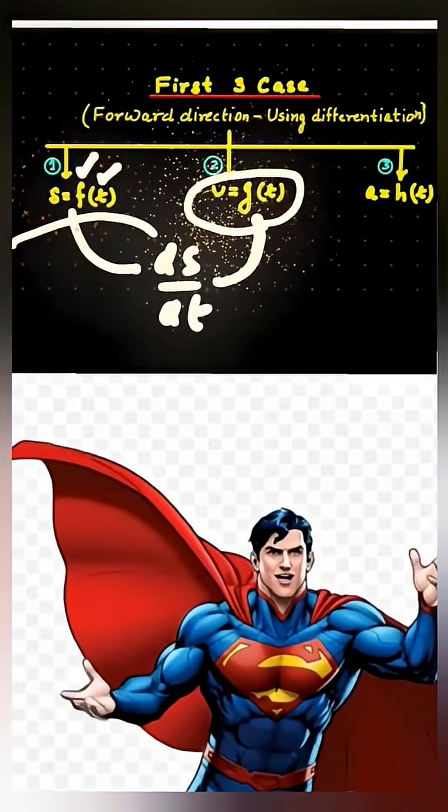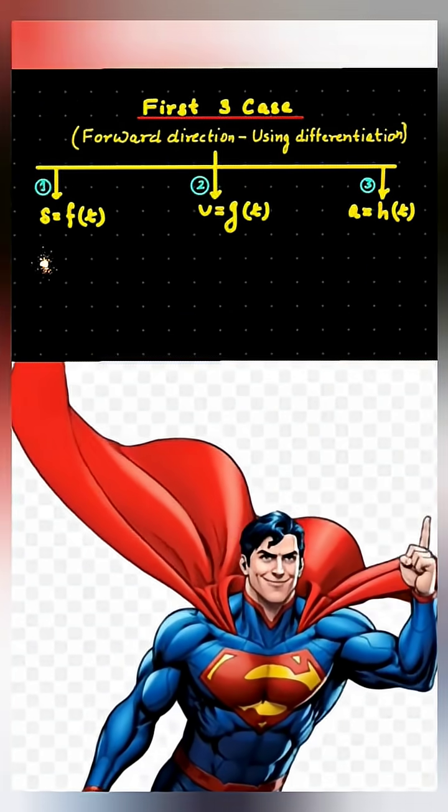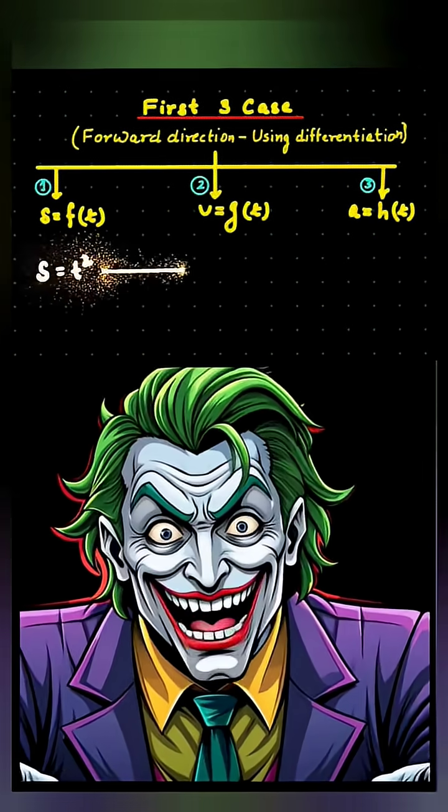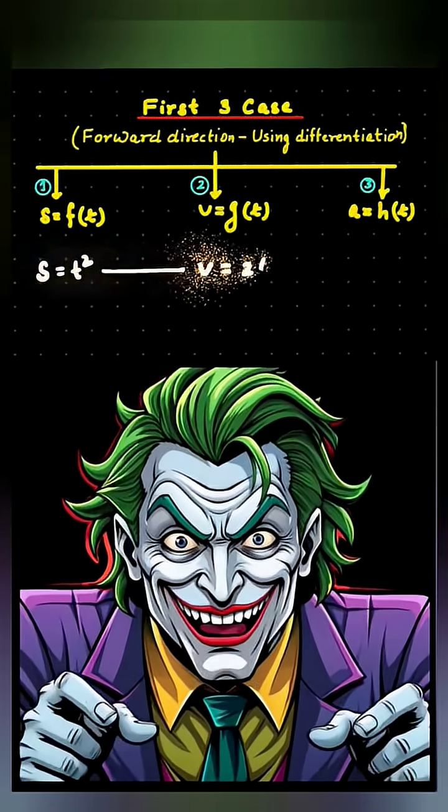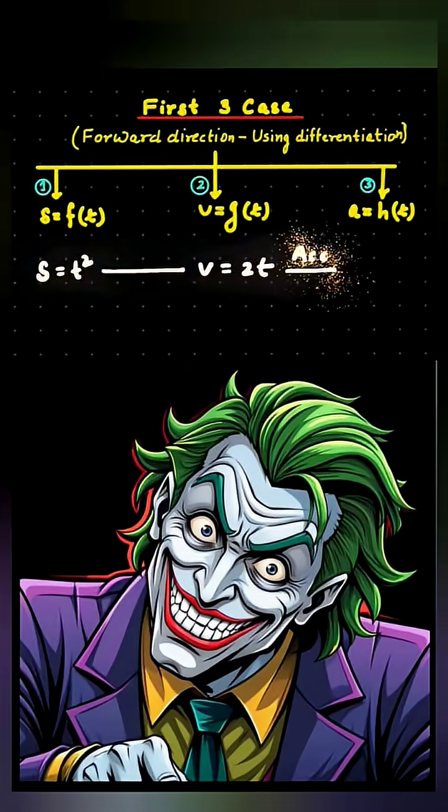Then, differentiate it once with respect to time. That gives velocity. So, if displacement is T squared, velocity becomes 2T, and differentiate again gives acceleration 2.